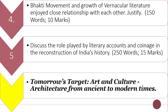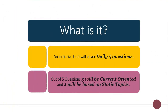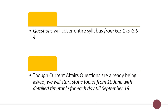These are the five questions of today. Tomorrow's target is the art and culture part, focusing on architecture from ancient to modern times. For those seeing my video for the first time, this is an initiative in which we cover five questions daily — three current-affairs oriented and two from static topics — and we will cover your entire GS papers. We have a 99-day super plan to cover your entire syllabus, and from today onwards we have also started static topics, as today is 10 June.